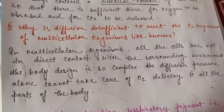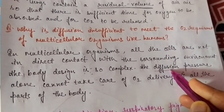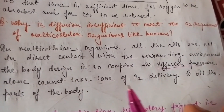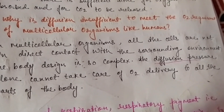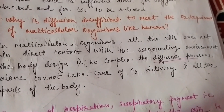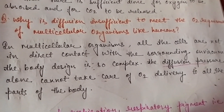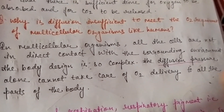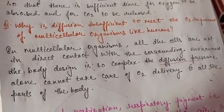The cells are not directly connected to the environment in multicellular organisms. Organs have specific different functions and the body design is very complex. Therefore diffusion pressure alone cannot deliver oxygen to all parts of the body. So diffusion alone is not sufficient for oxygen requirements in human beings.